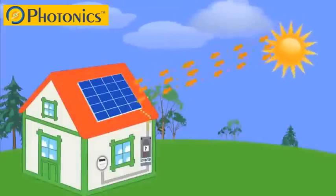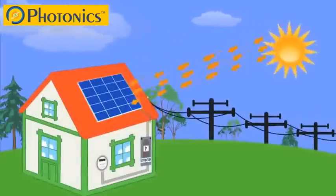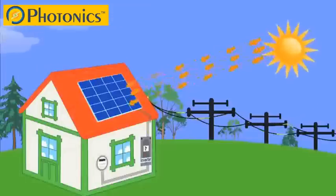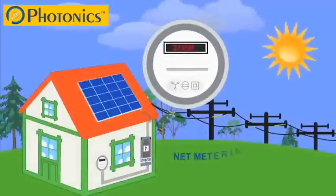What's even better, solar electric systems can produce more electricity than your home needs, and the extra you do not use goes back to your utility grid. This is called net metering, and you'll be able to enjoy watching your utility meter spin backwards.